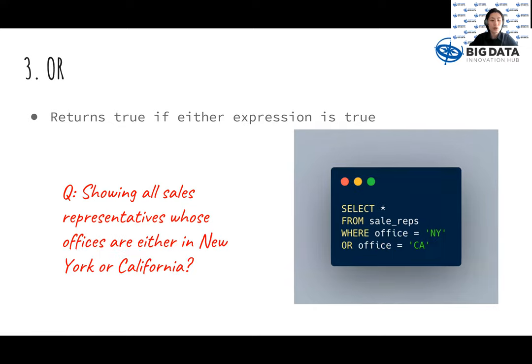Third, OR returns true if either expression is true. By using OR, we can get all sales representatives data whose offices are either in New York or California.